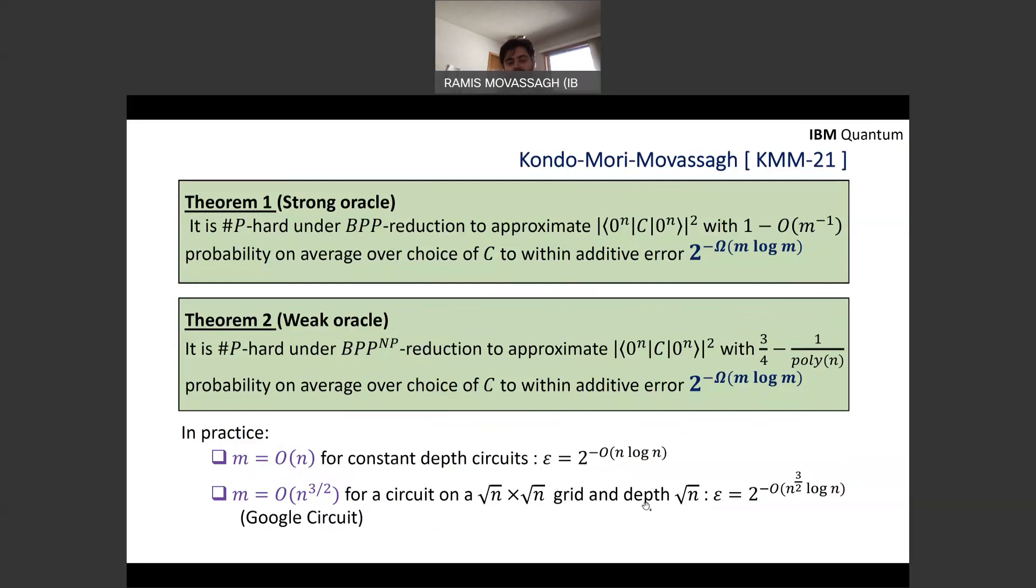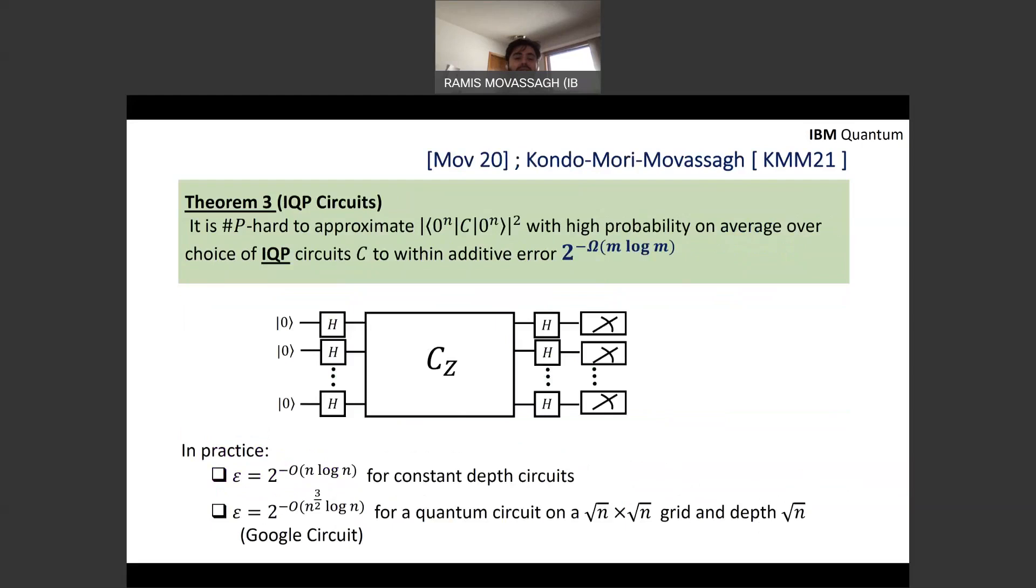And in practice, if you have a constant depth circuit, this means that we can prove to a neighborhood epsilon of 2^{-N log N}. And remember that we wanted 2^{-N} essentially. And for the Google type circuits where the depth is √N, so you have a grid of √N by √N N qubits, it's a two dimensional architecture and the depth is √N. Then epsilon is 2^{-O(N^{3/2} log N)}. So we don't quite have it yet, but we're getting close.